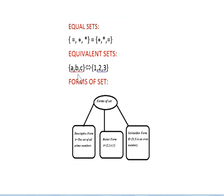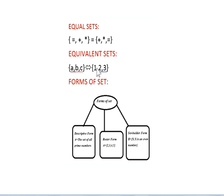Next one is equivalent sets. Equivalent sets means the counting only is the same. Here one set has elements A, B, C — the number of elements is 3. The other set has elements 1, 2, 3 — also 3 elements. But the elements are different: here A, here 1. So only the counting is the same. Therefore, this type of set is called an equivalent set.